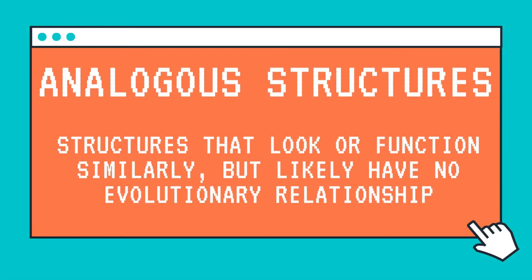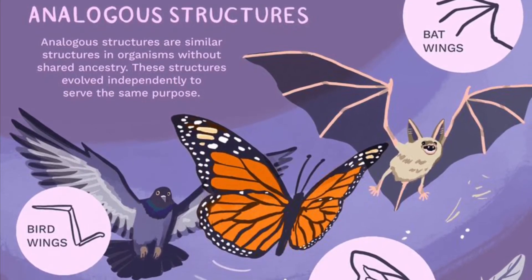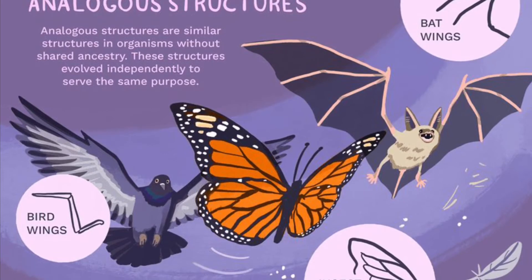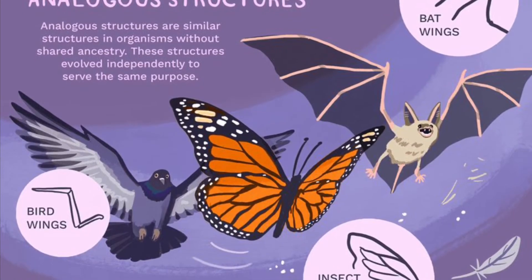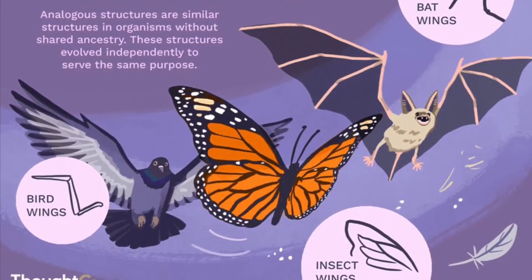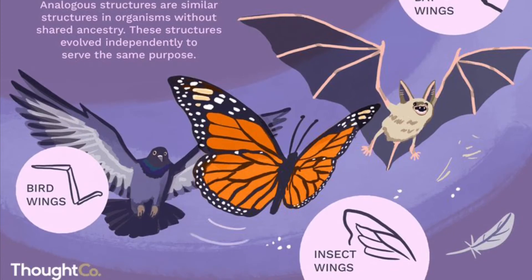Next, we have analogous structures. Don't mistake these — they are structures that look or function rather similarly, but on the inside don't have enough commonalities for us to draw any evolutionary relationships from them. In this picture you can see the bird, the bat, and the butterfly. While they all have wings, it's generally thought that they developed quite independently from one another. One of these species did not descend from the other. They are so distantly related that their wings had to develop naturally in response to their environment without any influence from one another.